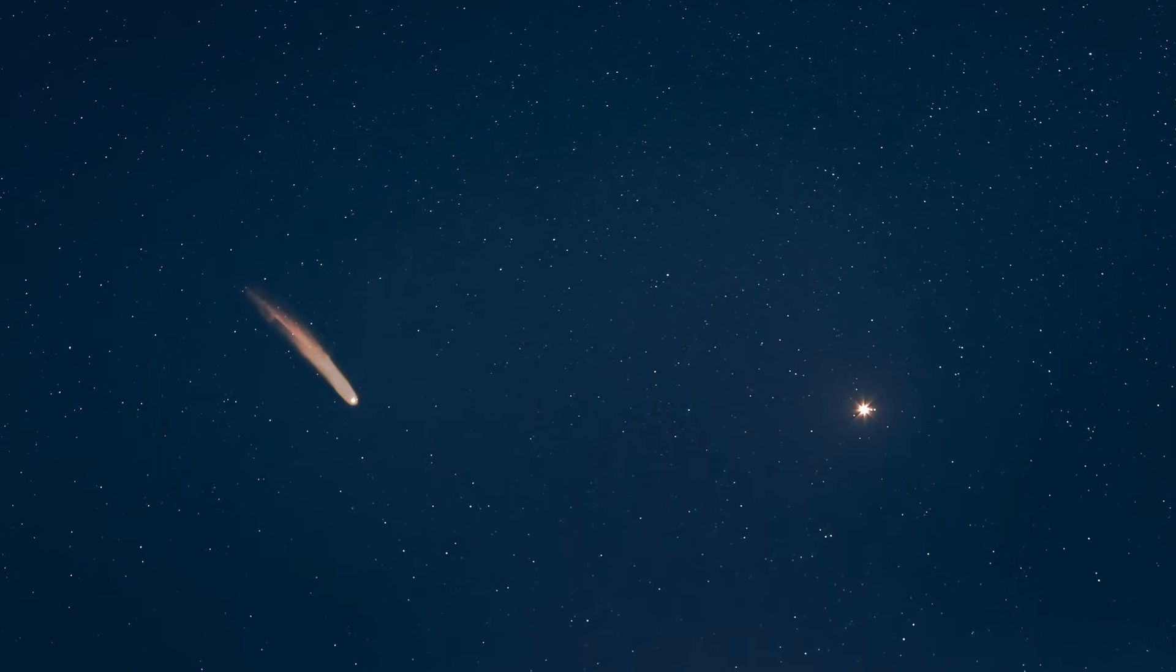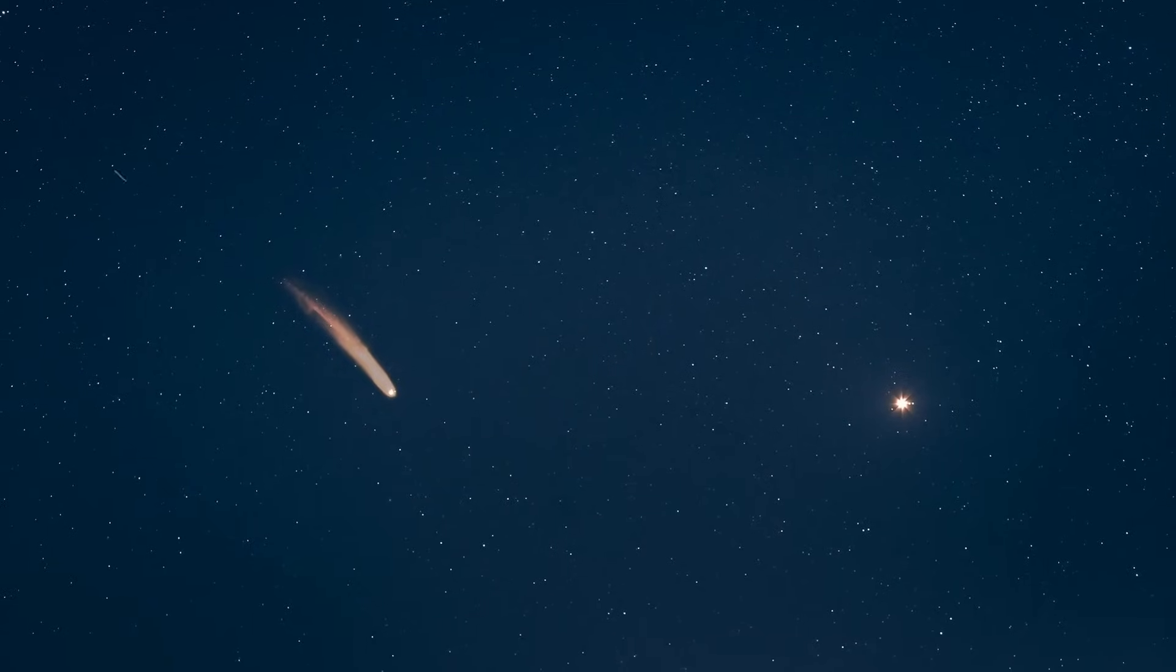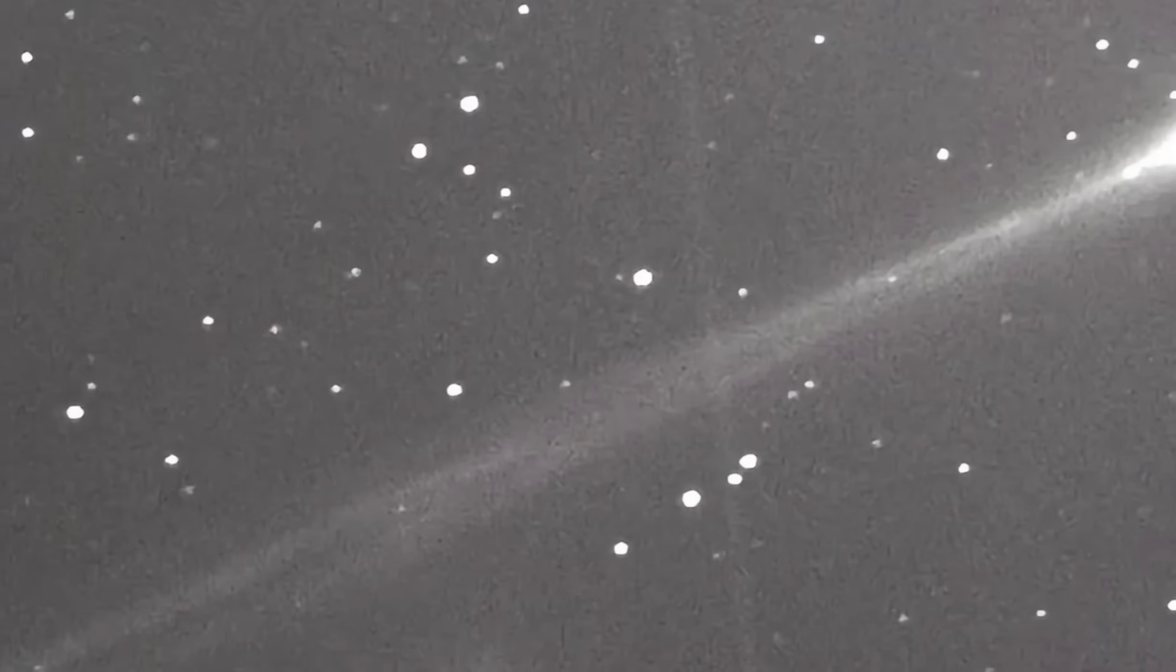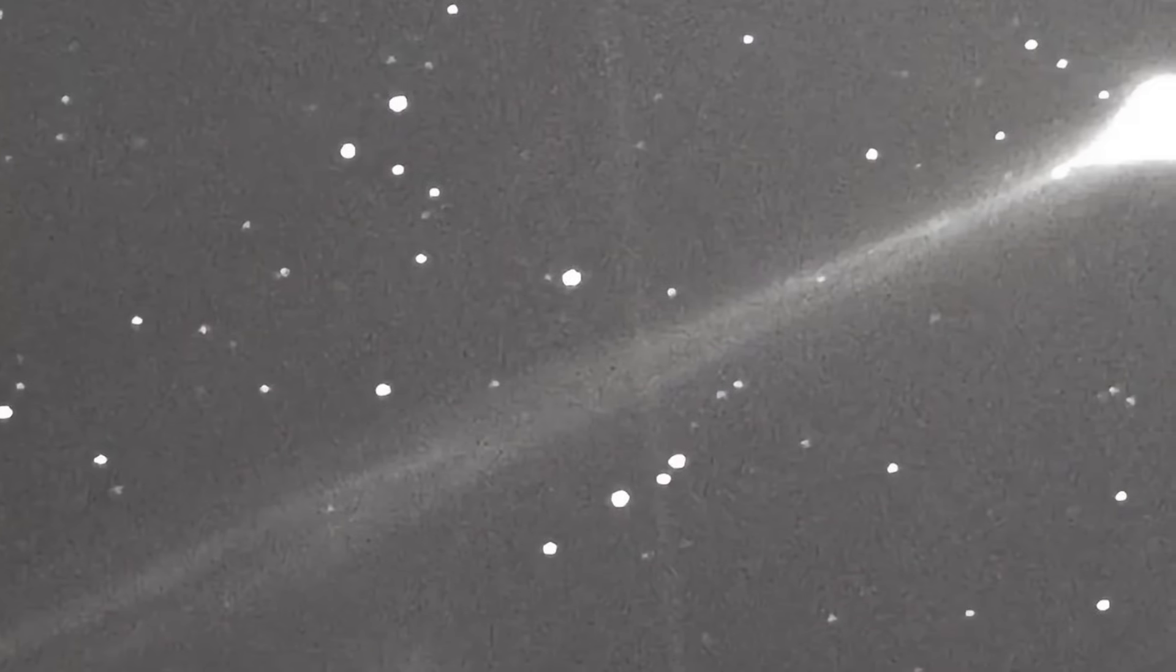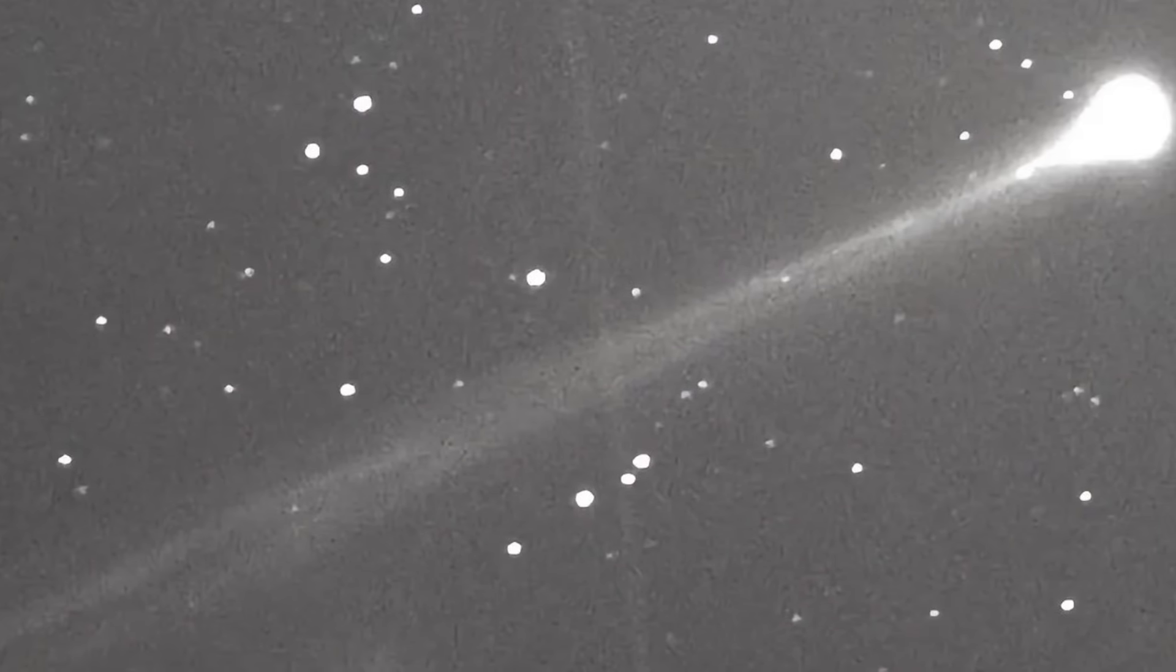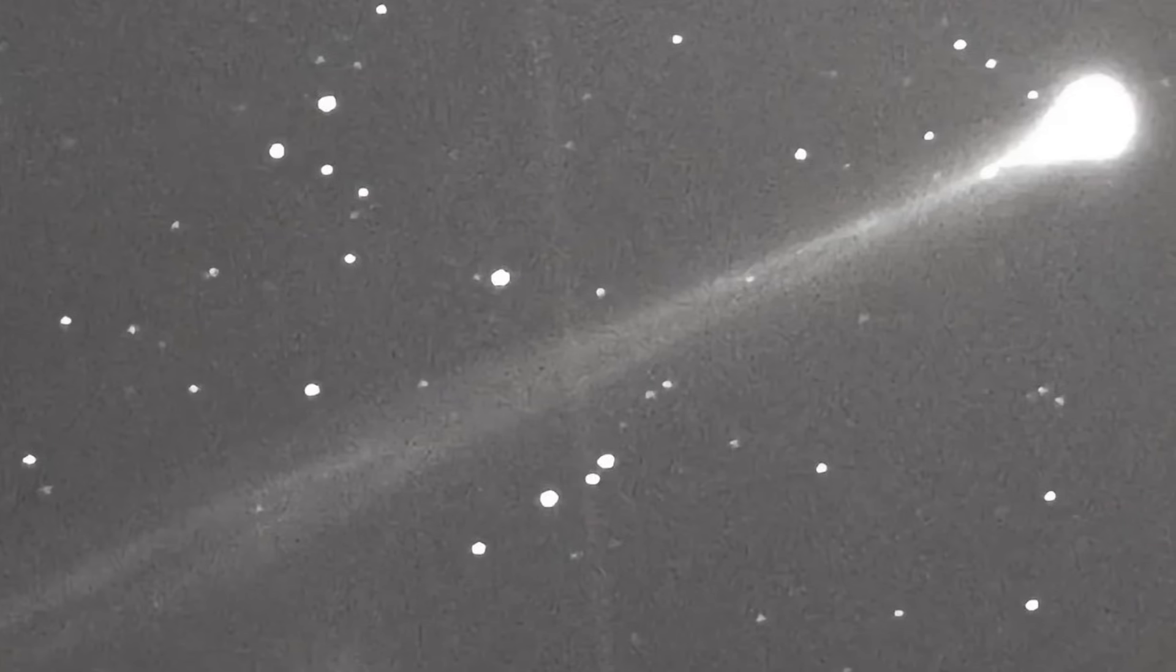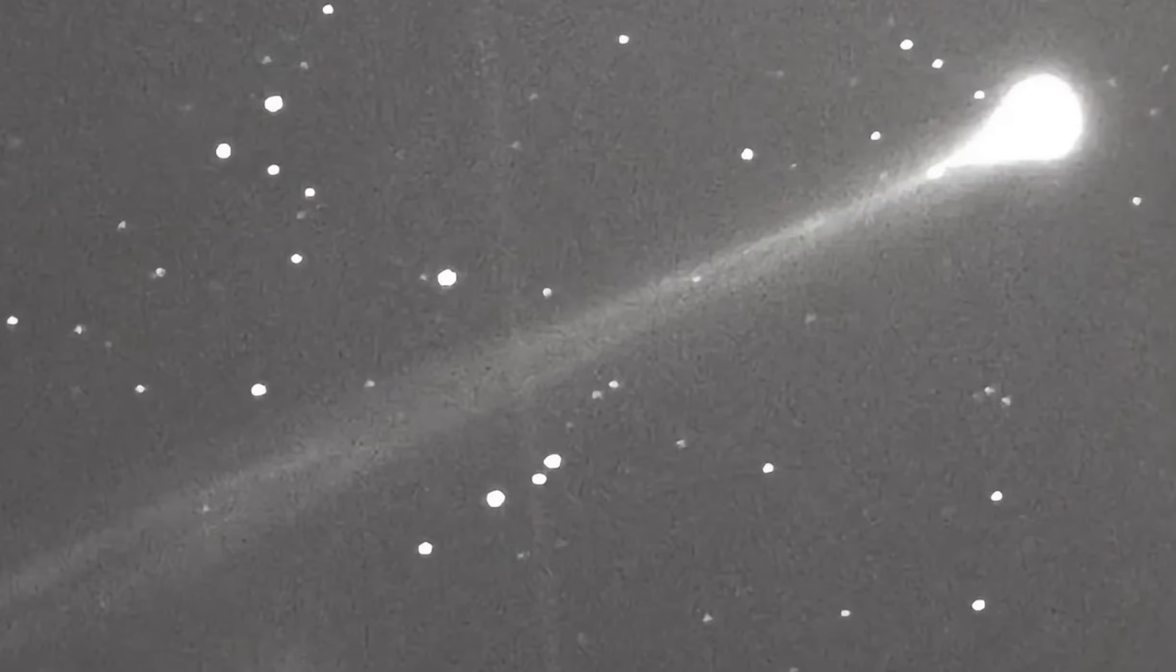Just days later, on October 29th, it will reach perihelion, its closest approach to the sun, traveling at an extraordinary velocity of nearly 68 kilometers per second. After that, it will recede once more into the outer solar system and eventually back into interstellar space.